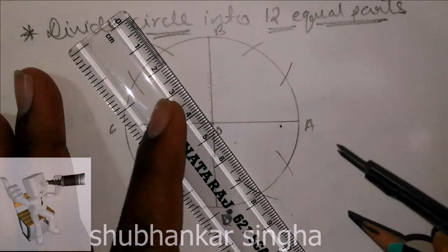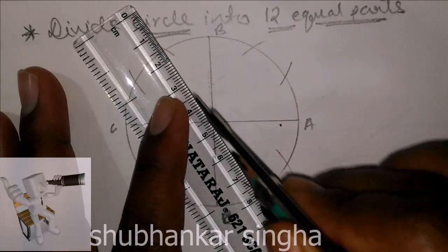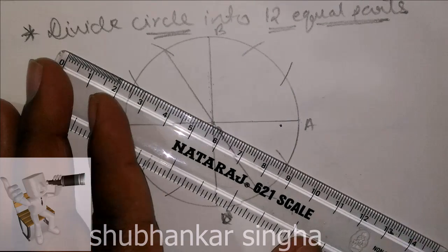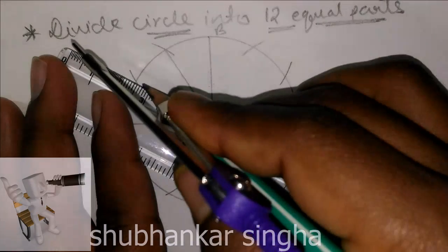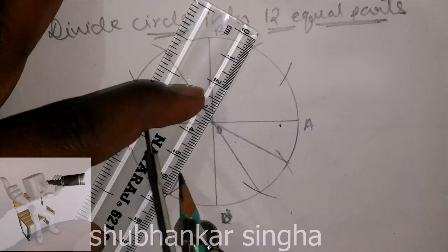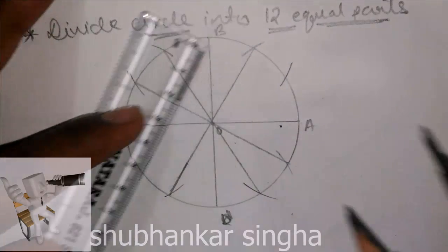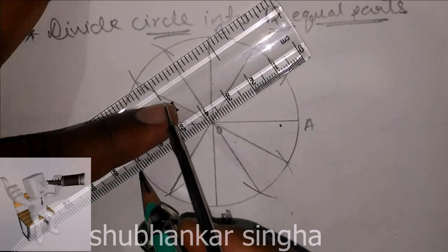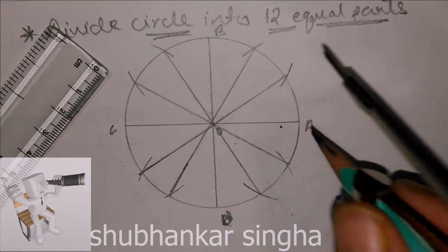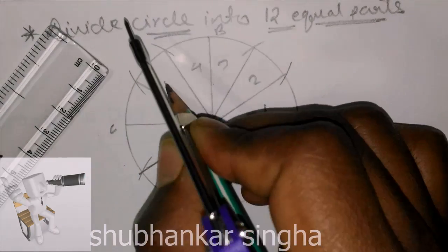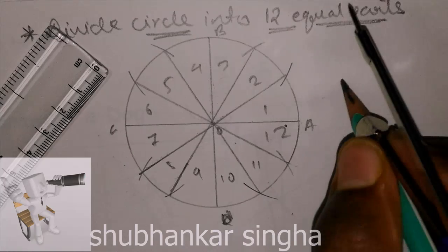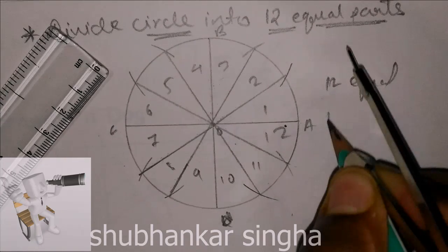Joining all the points — 1, 2, 3, 4, 5, 6, 7, 8, 9, 10, 11, 12. Now we got 12 equal parts.